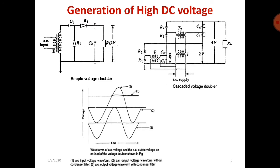We have seen two methods: half wave rectifier and full wave rectifier. There is one limitation — we can get a maximum output voltage only up to V maximum. If our requirement is more than V maximum, then we have to use a voltage doubler circuit.